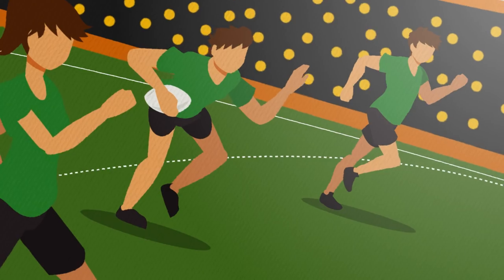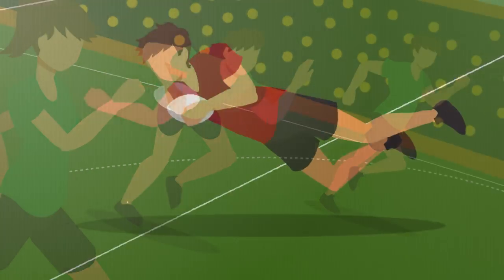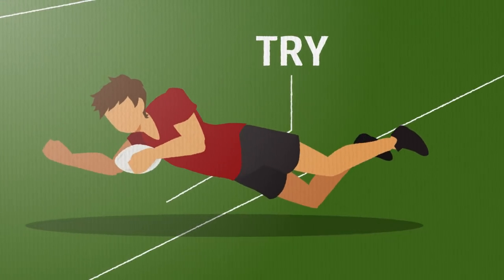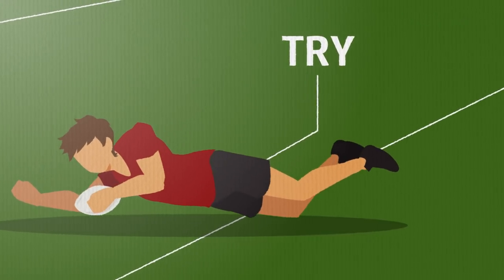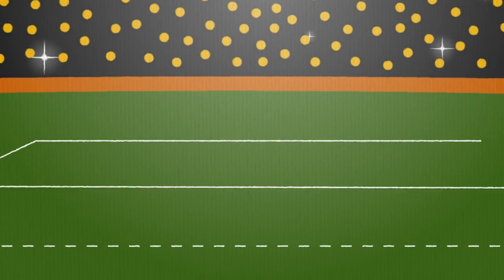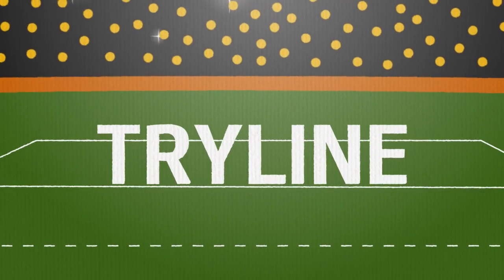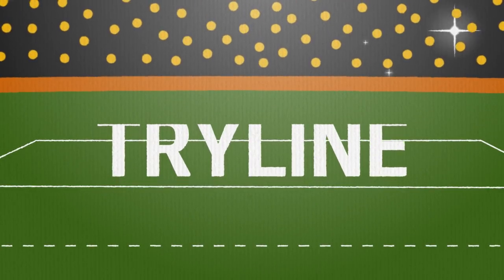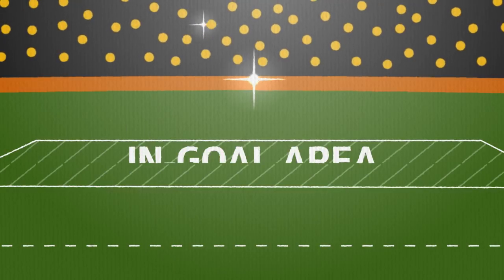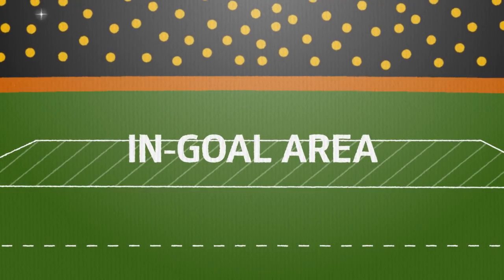Terminology has changed. Try replaces touchdown. Try line replaces score line. In goal area replaces touchdown zone.